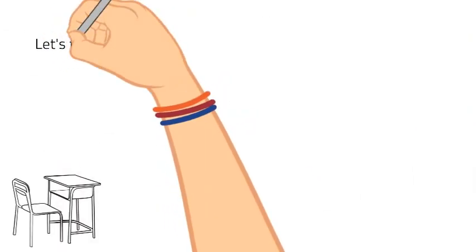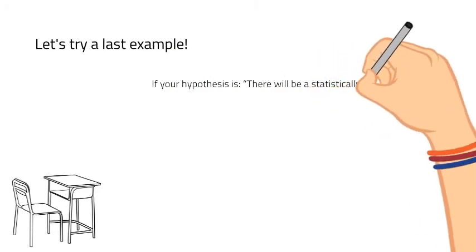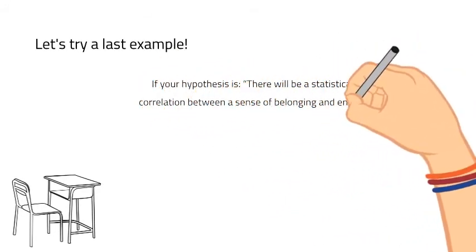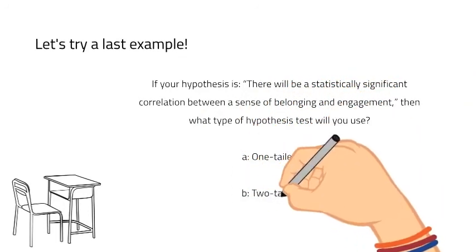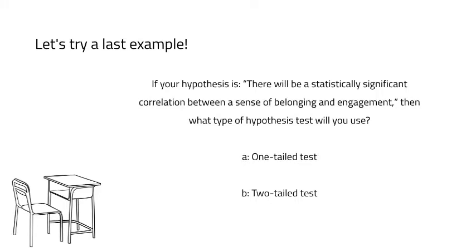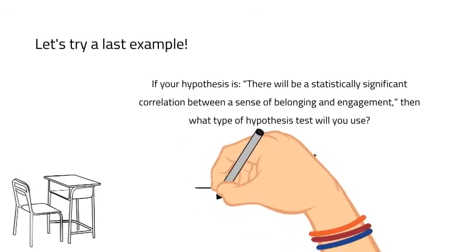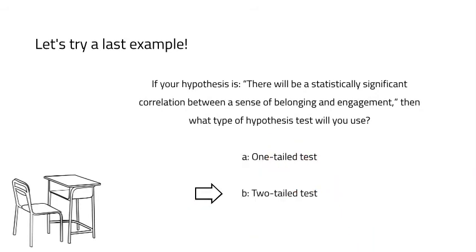Let's try our last example. If your hypothesis is there will be a statistically significant correlation between sense of belonging and engagement, what type of hypothesis test will you use? This is a non-directional hypothesis because we haven't specified what kind of correlation. So we use a two-tailed test. If it's a positive relationship it might be in one tail, and if it's a negative relationship it might be in the other — we're not sure, so we look at both. If the hypothesis had instead said there will be a significant positive correlation, that would be a one-tailed test. But for this example, the answer is B, a two-tailed test.